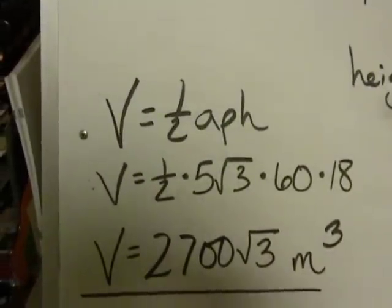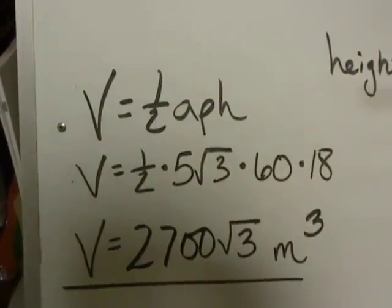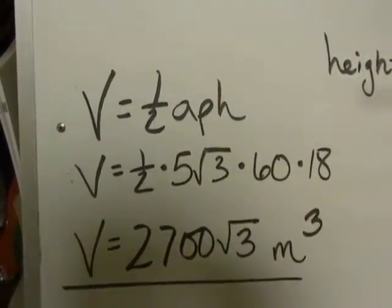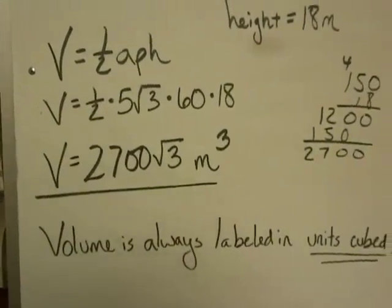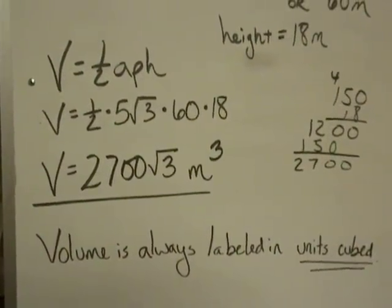And you'll find out that the volume of this hexagonal prism is 2,700 radical 3 meters cubed. Because remember, volume is always labeled in units cubed.